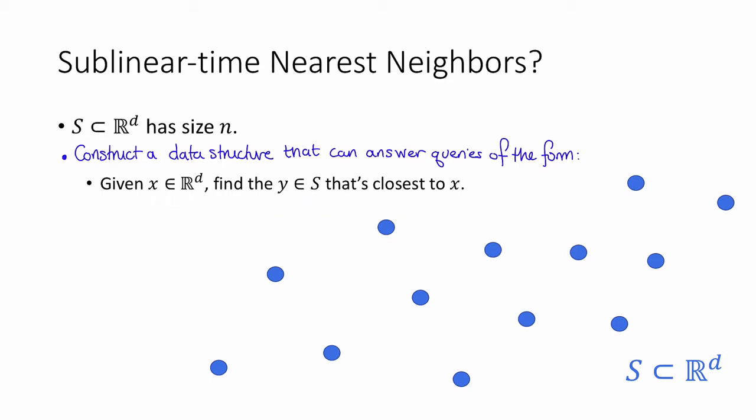So that is, before we query, we get to construct our favorite data structure, which can depend on the set S, and then at query time, we're queried about some vector X that goes into the data structure, and out comes the right answer, Y. And then maybe later we want to make another query about some X prime, maybe the correct answer there is Y prime, and if we put that into our data structure, we'll get out the right answer.